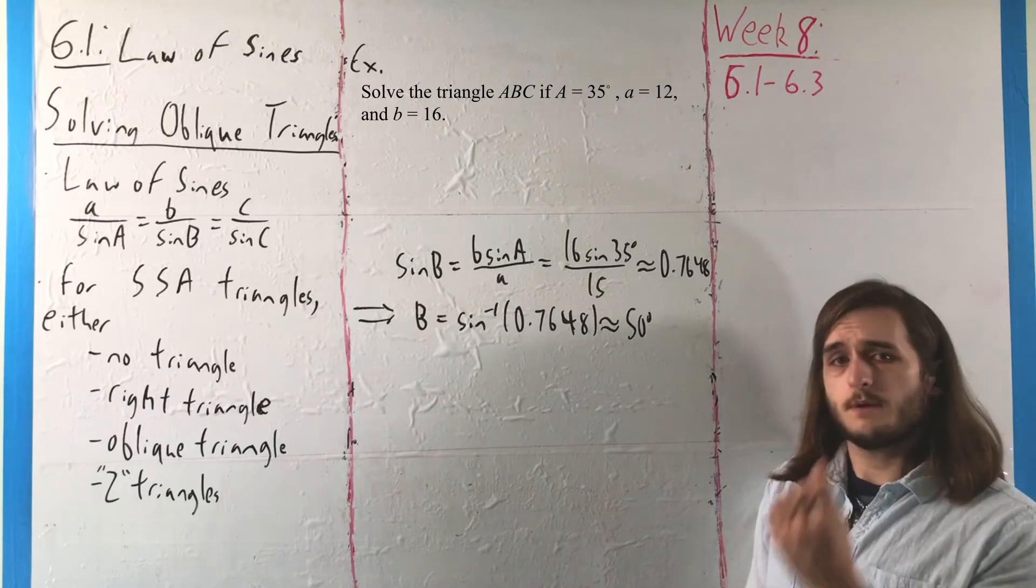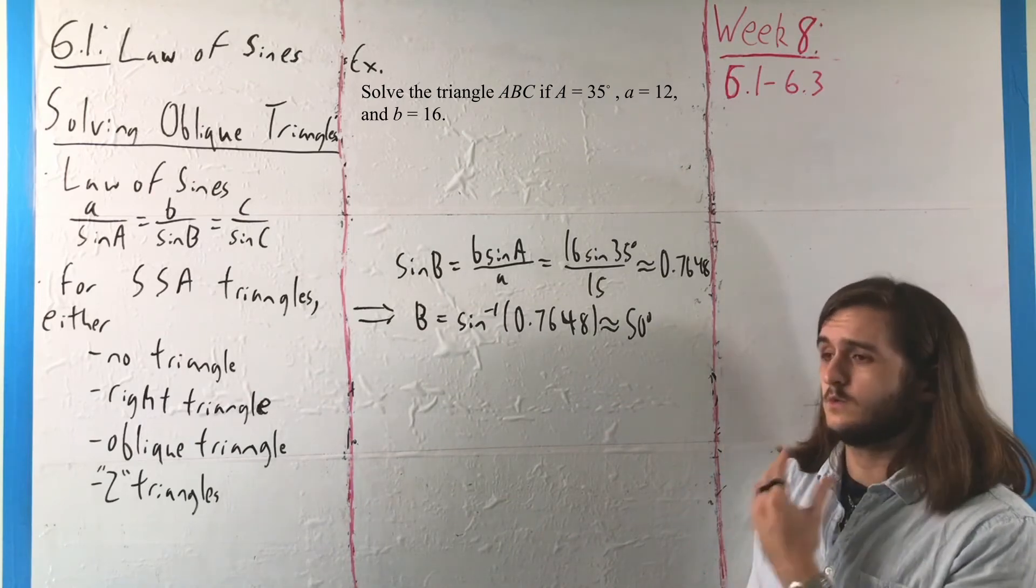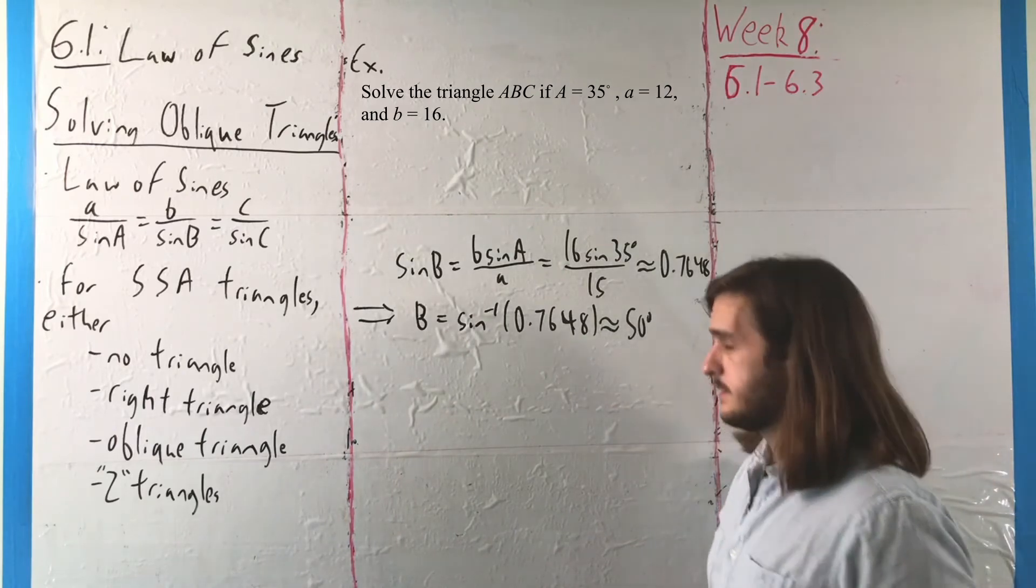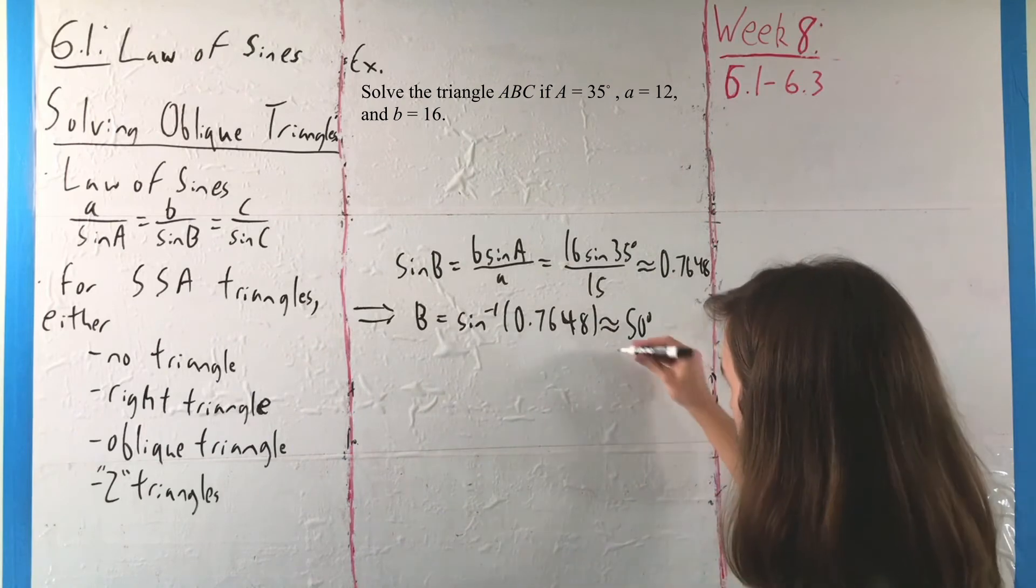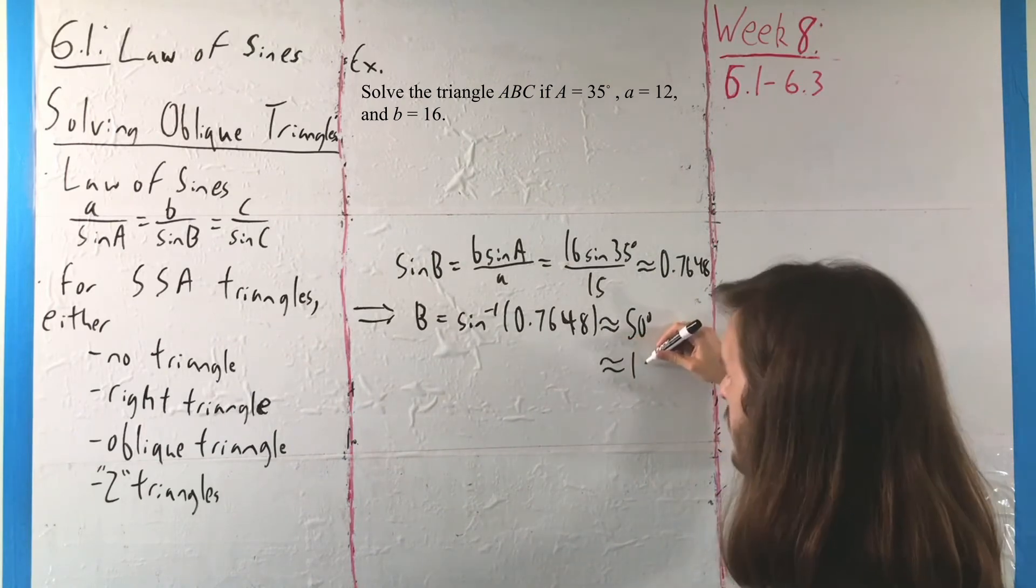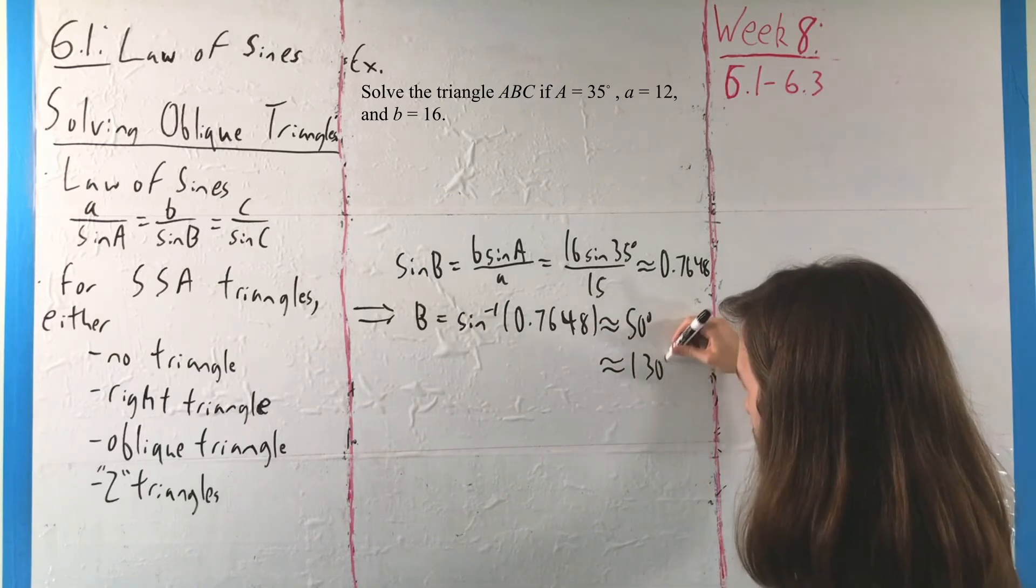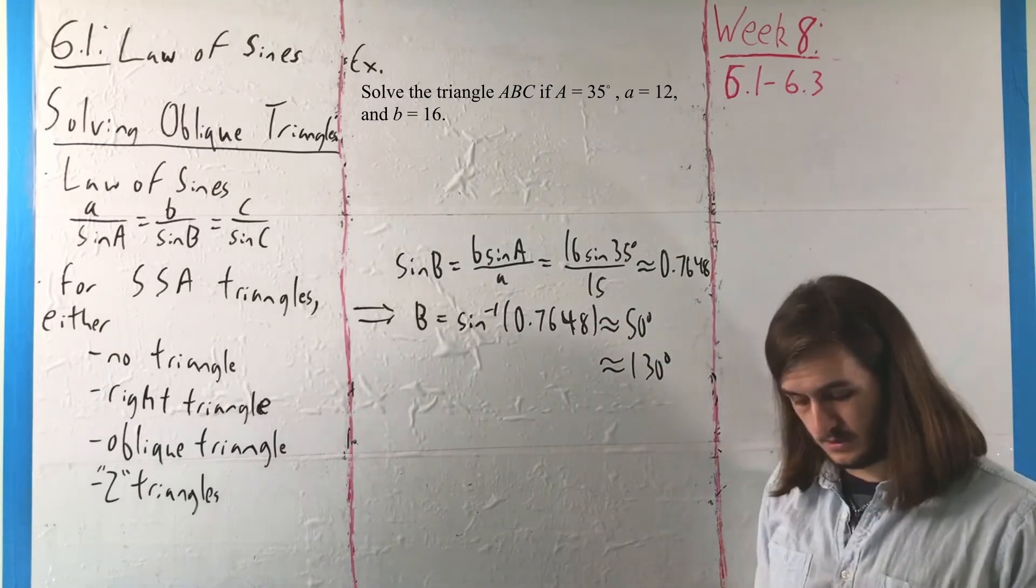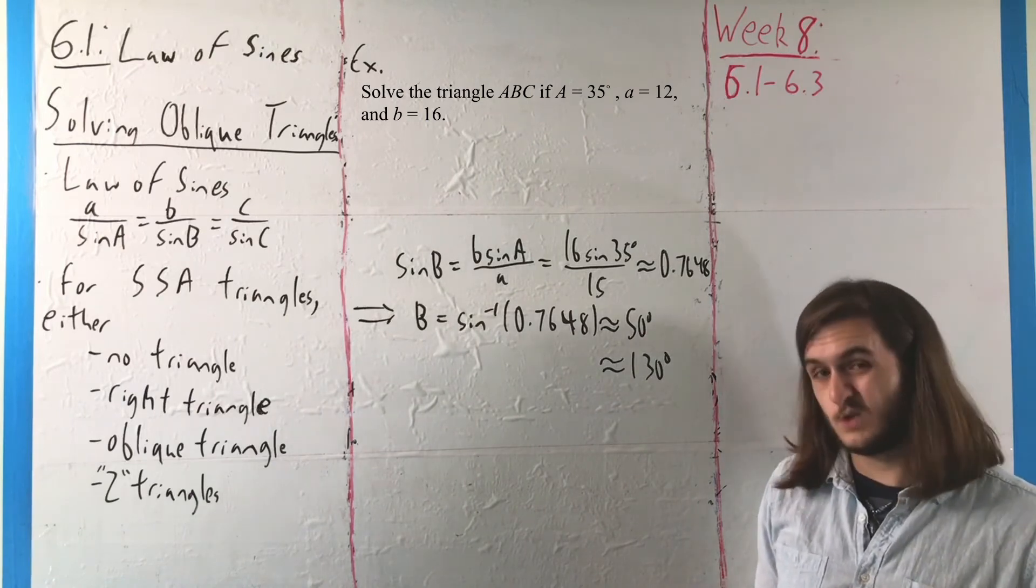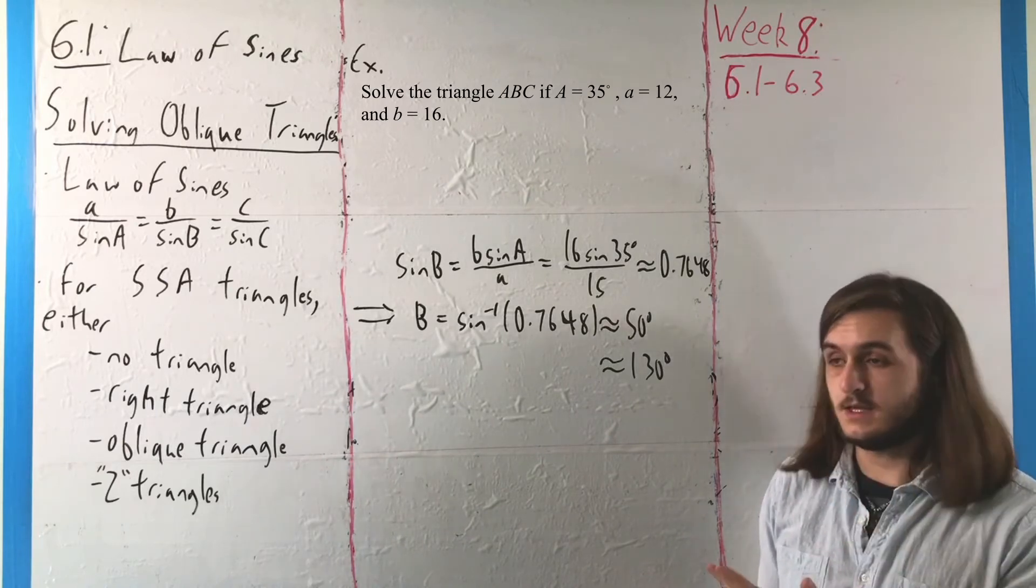But sine is also positive in the second quadrant. So there's actually a second value where this will still work in the second quadrant 50 degrees above the axis. So that is, sine can also be equal to 0.7648 at 130 degrees. And as a result, we don't just have the one value that we can get for B, we have two values.